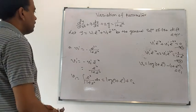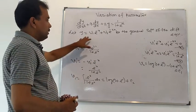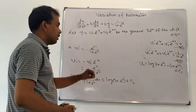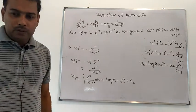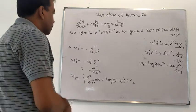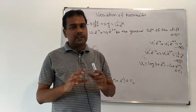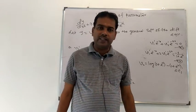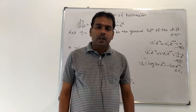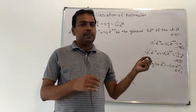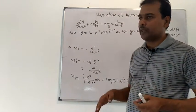Putting the values of v1 and v2 into the assumed general solution, we get the complete general solution of the given differential equation. To summarize this method: for a higher order linear differential equation, we first find the complementary function, then replace the arbitrary constants with functions of x, and determine those functions using the system of equations derived by differentiation and substitution.